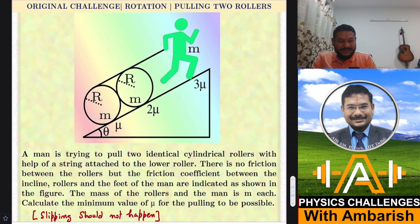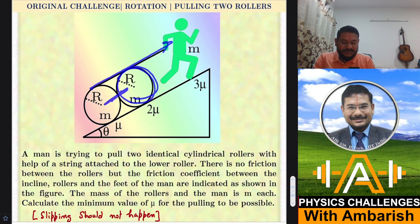Here's the problem: a man is trying to pull two identical cylindrical rollers with help of a string attached to the lower roller. This is the roller and we have a string going tangentially like this. There's another roller in touch with this and there's no friction between the rollers.